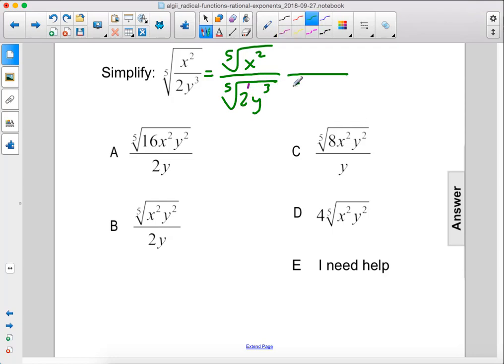We need to multiply it by the fifth root of 2 to the fourth power because when we multiply these together, 2 to the first power times 2 to the fourth power will give us 2 to the fifth power, which is the index and that's what we want.